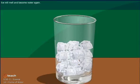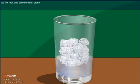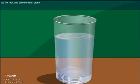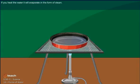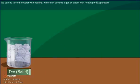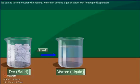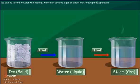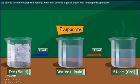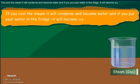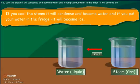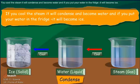Did you know that if you kept a glass full of ice and just let it stand for a while, what would happen? Right, the ice will melt and become water again. Now if you heat the water, it will evaporate in the form of steam. Water can become a gas or steam with heating or evaporation. If you cool the steam, it will condense and become water, and if you put your water in the fridge, it will become ice.